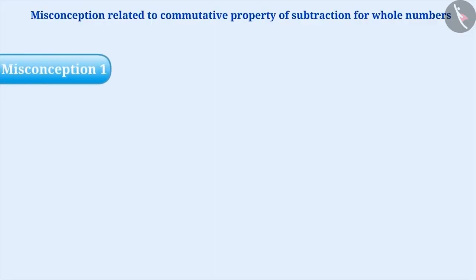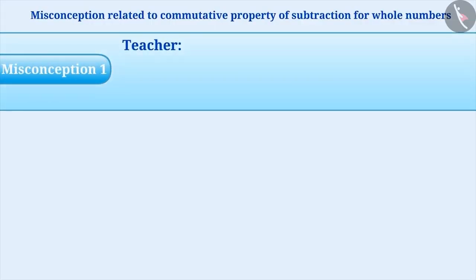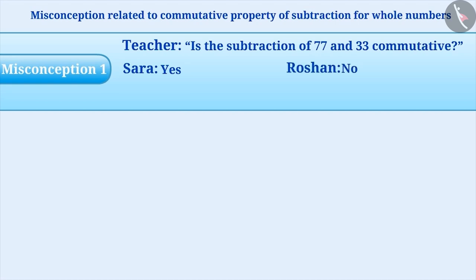Misconception 1: Teacher asked a question in the class. Is the subtraction of 77 and 33 commutative? Sara answered yes, while Roshan said no. Who gave the right answer?